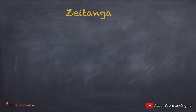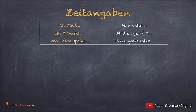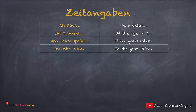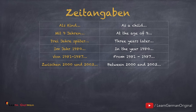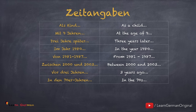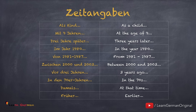Wenn man einen Bericht schreibt oder Sätze in Präteritum, dann kann man ein paar Zeitangaben benutzen. Zum Beispiel: als Kind, mit neun Jahren, drei Jahre später, im Jahr 1980, von 1981 bis 1987, zwischen 2000 und 2003, vor drei Jahren, in den 70er Jahren, damals, früher. You can use these time expressions when you are writing your sentences in Präteritum.